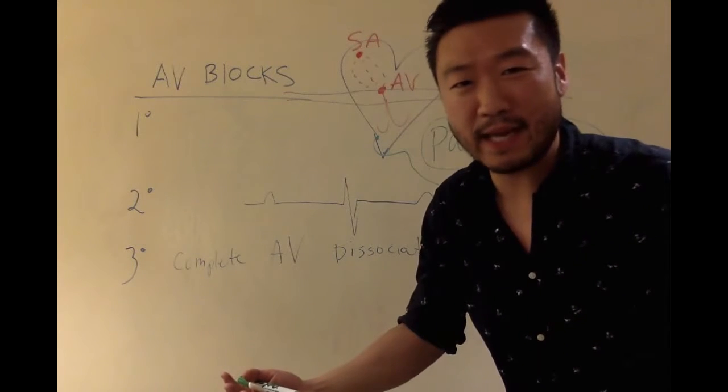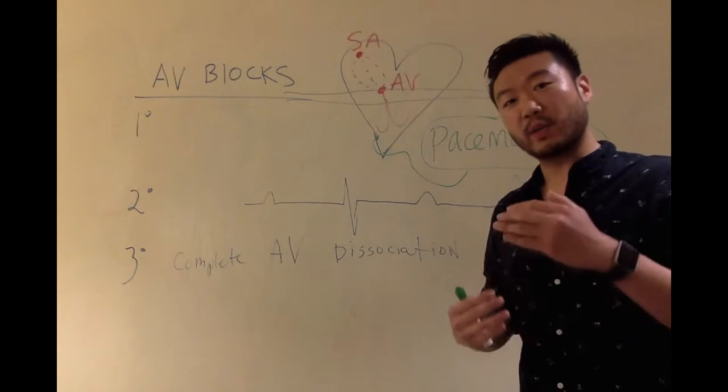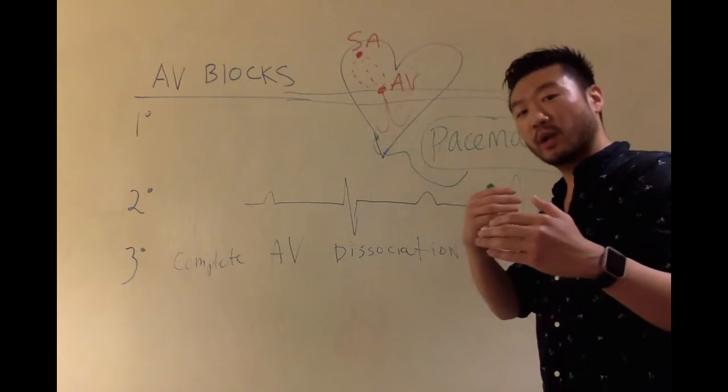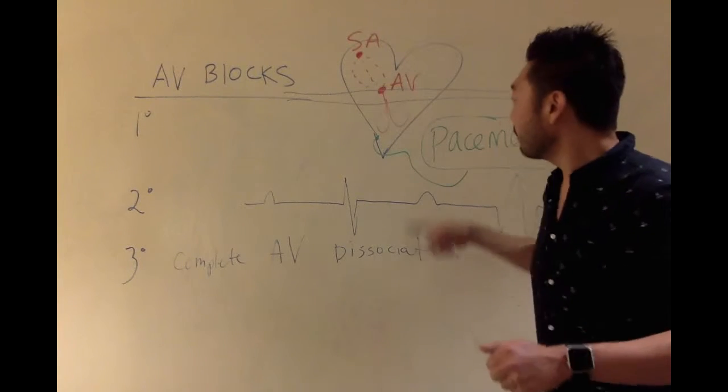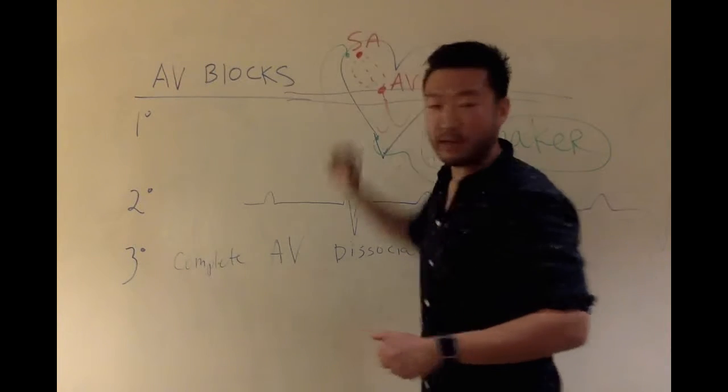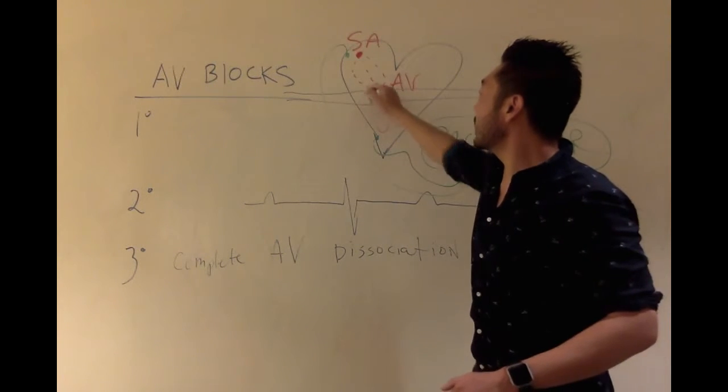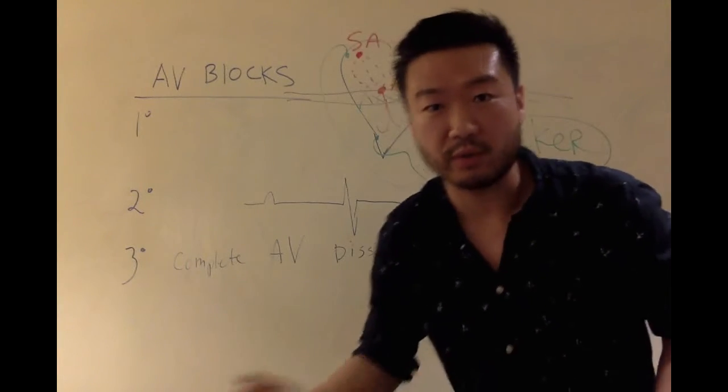So why don't they put it in the SA node? Well, one of the big reasons, remember, there's a block between the SA node and the ventricles, the AV block. So if you were to put the pacemaker wire up here in the atria, it still would not go through into here. So you need to put it at the ventricles.